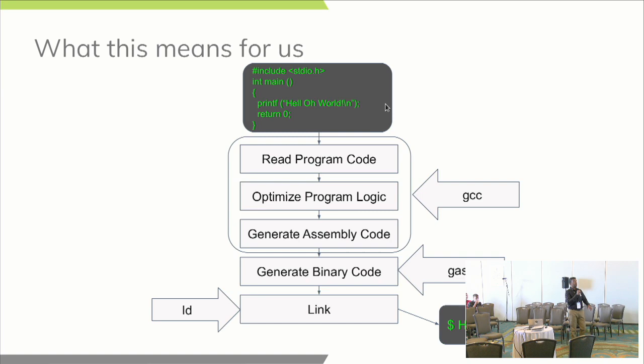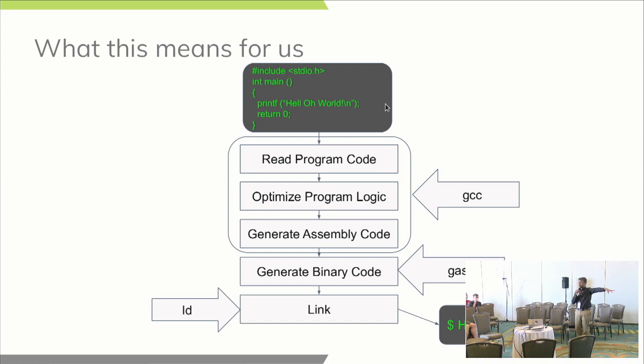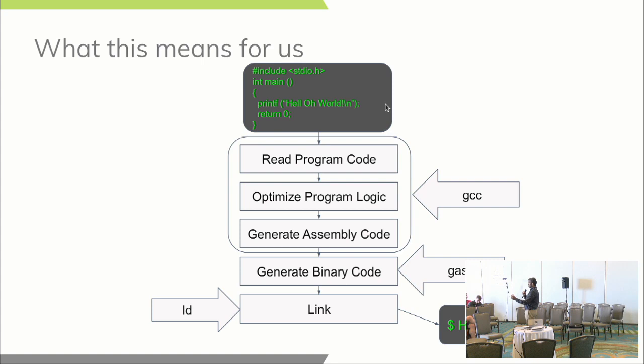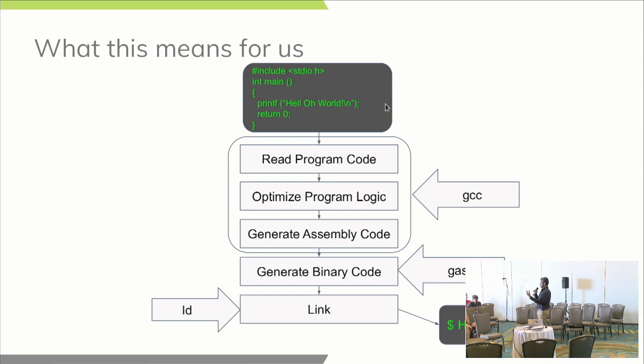What does GCC look like in this scheme — the GNU toolchain? You have source code which goes into GCC, which then goes into the GNU assembler, and then to the linker. GCC only does three things: reading the program code, optimizing it, and generating assembly. Then the assembler takes the assembly code and assembles it into binary object code. The linker takes that binary object code — which cannot do anything by itself — and essentially builds a house around it to give you your final executable.